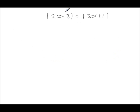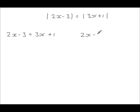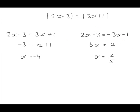If you have the modulus function on both sides, the method is still the same. Write the equation without the modulus, then write it again changing the signs on one side — I've changed the signs on the right-hand side and left the left-hand side exactly as it was. Solving both equations gives x equals minus 4 and x equals 2 fifths.